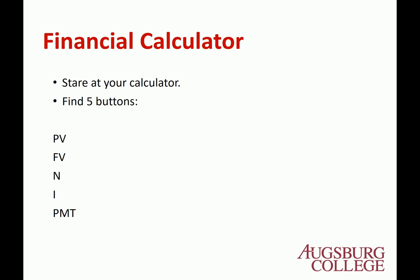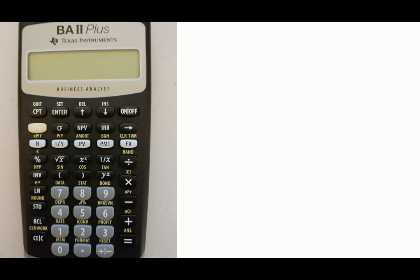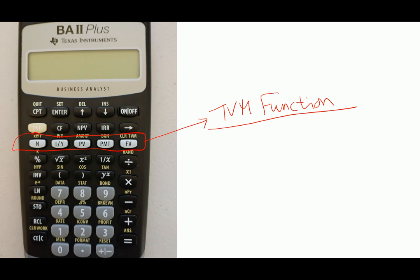So, Financial Calculator — first of all, I have this one: the BA II Plus Texas Instrument. On the calculator there are 5 buttons called the TVM function — Time Value of Money function. We're going to use this TVM function to get the present value, future value, interest rate, or number of periods. This is an important one.